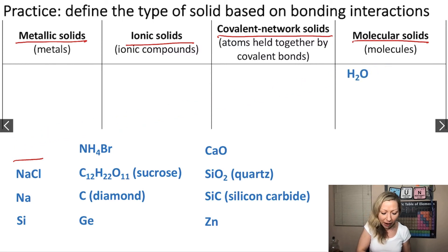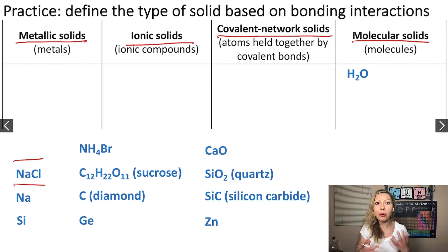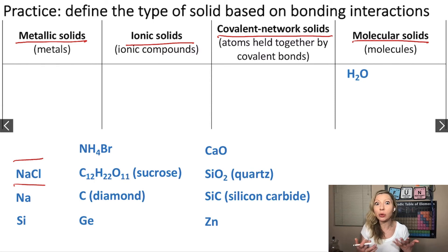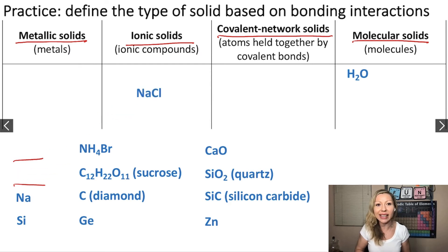What about sodium chloride? What type of compound is that? We know that it is composed of Na+ and Cl- ions. So this is table salt, which is an ionic solid.